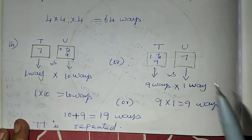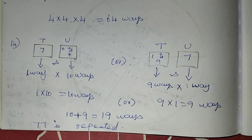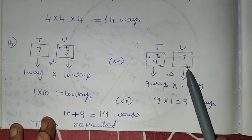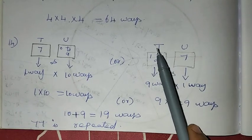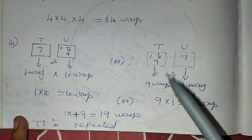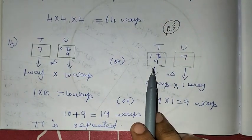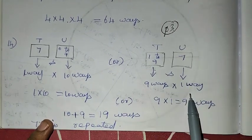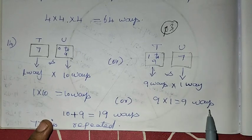The tens digit contains 7 — that's 1 way for tens place, and units place can be 0 to 9 — that's 10 ways; so 1 into 10 = 10 ways. The units digit contains 7 — units place is 7 (1 way), tens place can be 1 to 9 (9 ways); so 9 into 1 = 9 ways. These are 2-digit numbers where either units or tens place contains 7.